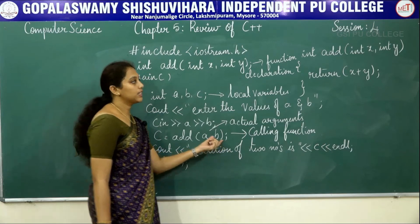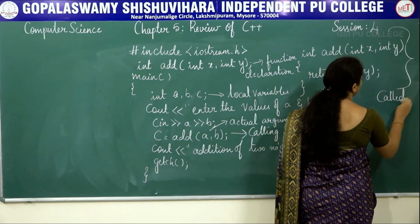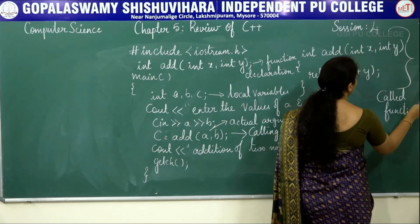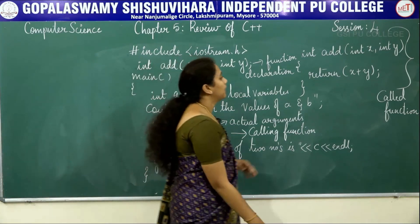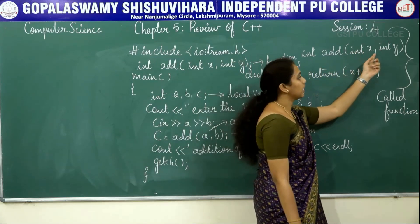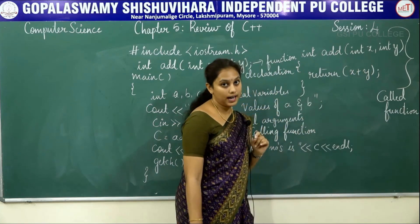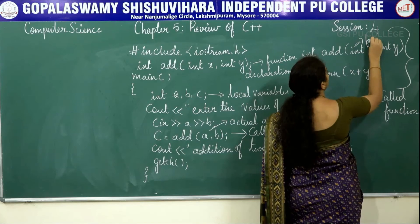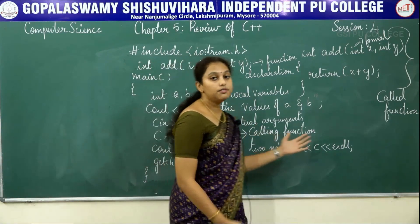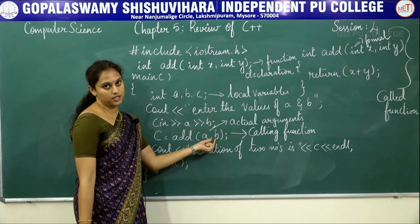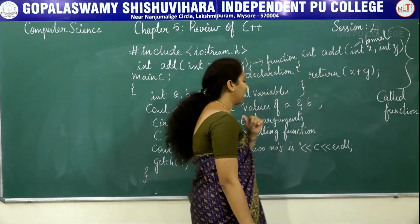After calling the function, the control is transferred to the called function. This entire section — 'int add(int x, int y)' — is called the called function. The variables used in the function header are called formal arguments. These arguments receive the values from the actual arguments, hence they are called formal arguments. Here, x and y accept the values from a and b.